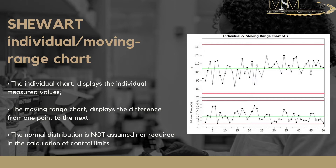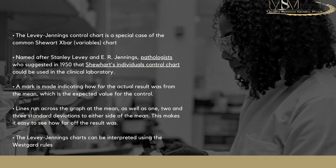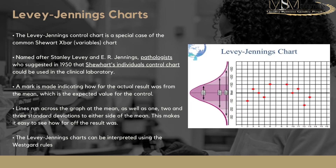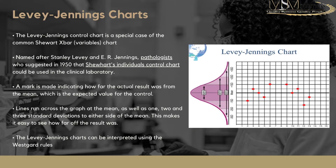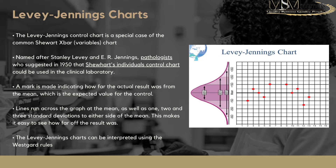In the lab we talk mainly of Levy-Jennings charts. These are a special case of the common Shewhart X chart, developed by two pathologists using these graphs in a clinical study. You have a mark representing your mean — your expected result — and then you plot different QC values every day over time relative to that mean. You also have lines for one, two, or even three standard deviations, so as you plot values you can see how far they are from the mean.